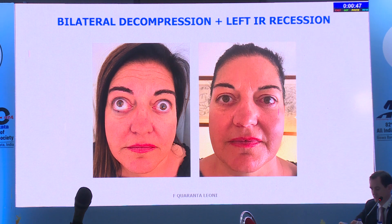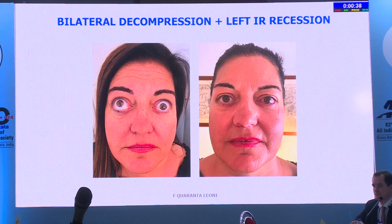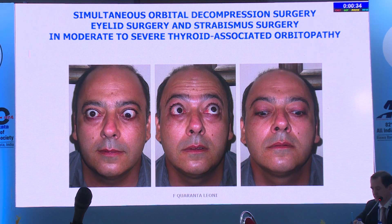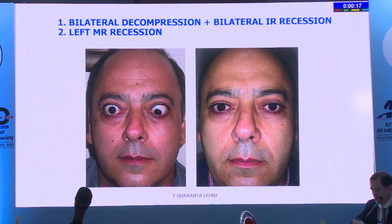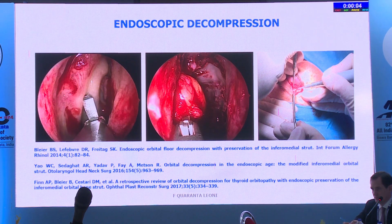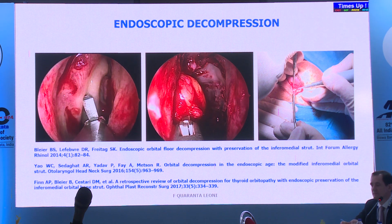Recent case: bilateral decompression and left inferior rectus recession—patient from Sardinia looking good at day five. Endoscopic medial wall surgery is key because the eye is left untouched, allowing additional orbital surgery simultaneously. Preserving the strut and a band of medial periosteum allows orbital content to prolapse into the paranasal sinuses without completely displacing the globe contents—very important.